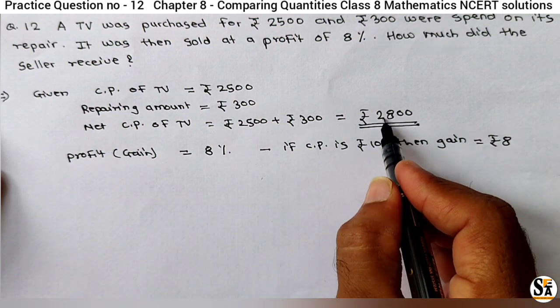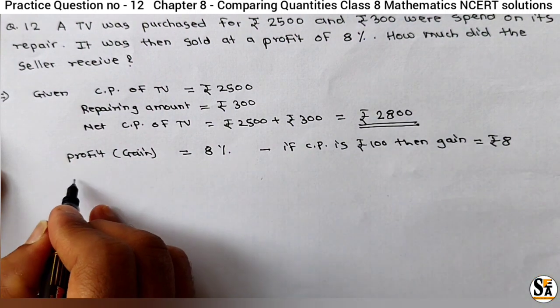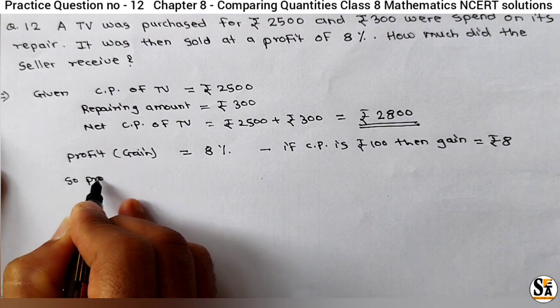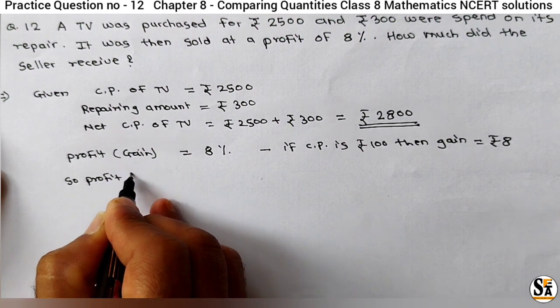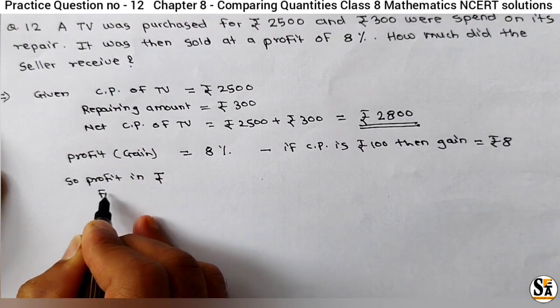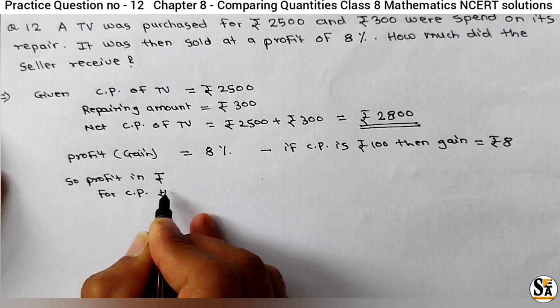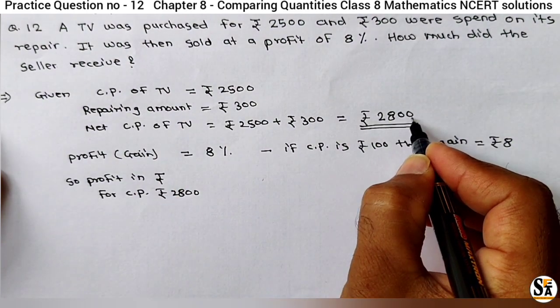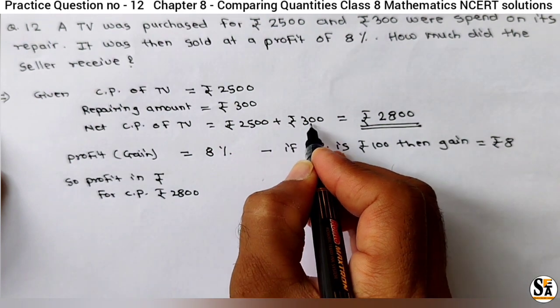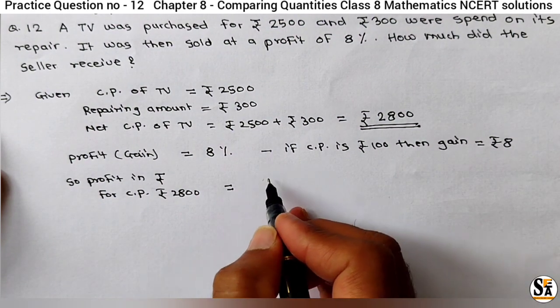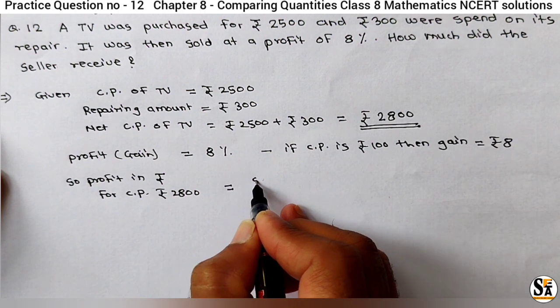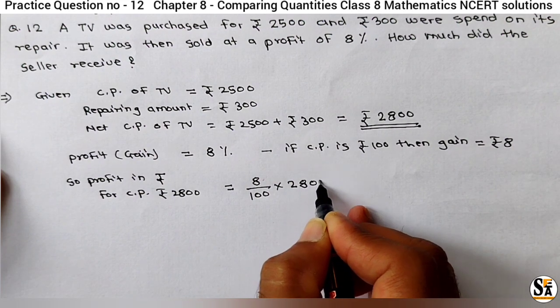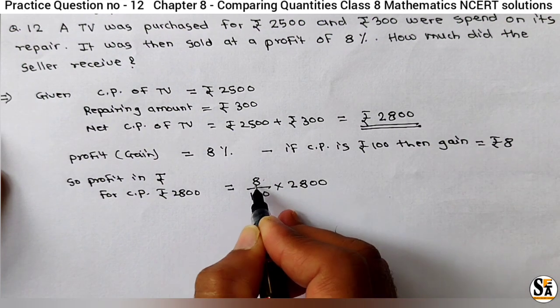But we have CP Rs 2800. So we will calculate this profit or gain in Rs. So profit in Rs for CP Rs 2800, isn't it? Because our net CP is 2800, which includes its original CP plus repairing cost. That will be equal to, this is 8%, means 8 upon 100 into 2800. This is our net CP and this is the percentage profit.